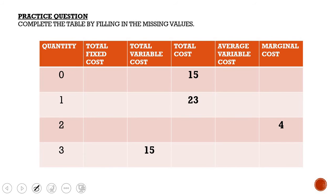Now we're going to look at a practice question on how to calculate the different costs — this is a definite test question. The table gives you quantity, total fixed cost, total variable cost, total cost, average variable cost, and marginal cost. Total fixed cost plus total variable cost gives you total cost, and you need to calculate average variable cost and marginal cost.